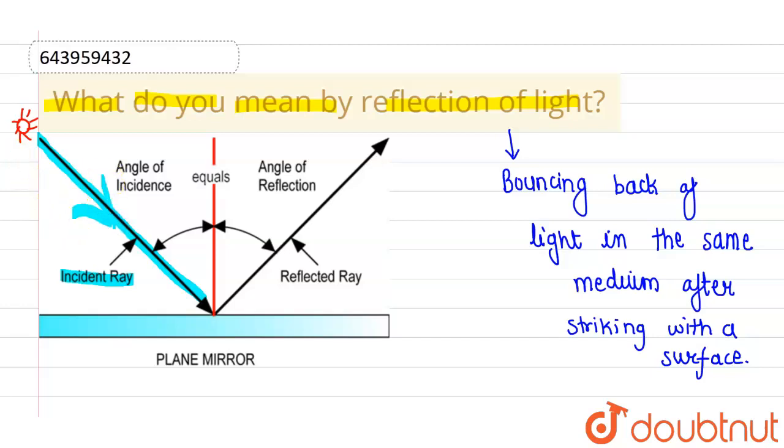Now, this will strike with the plane mirror, and this bounces back by changing its direction.